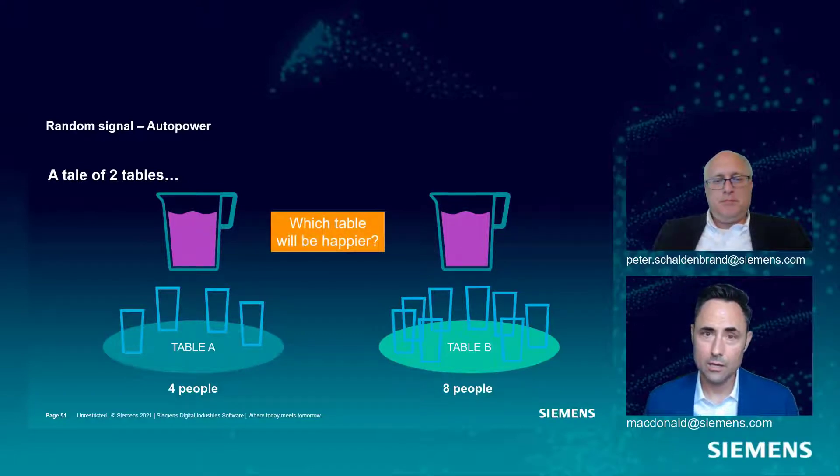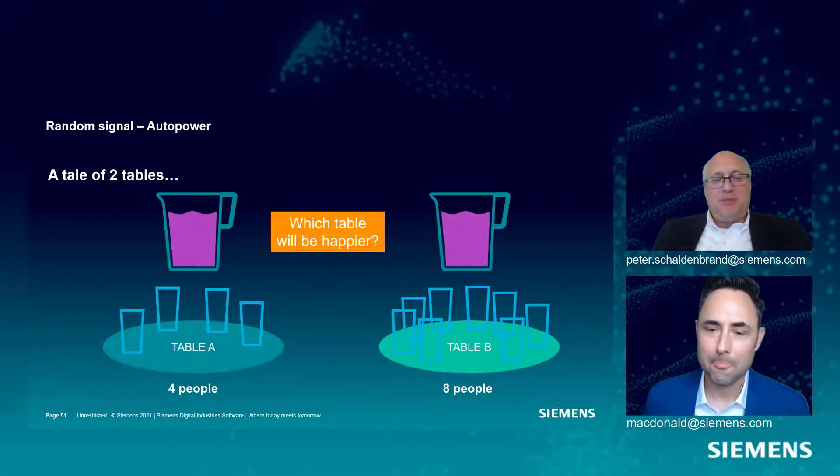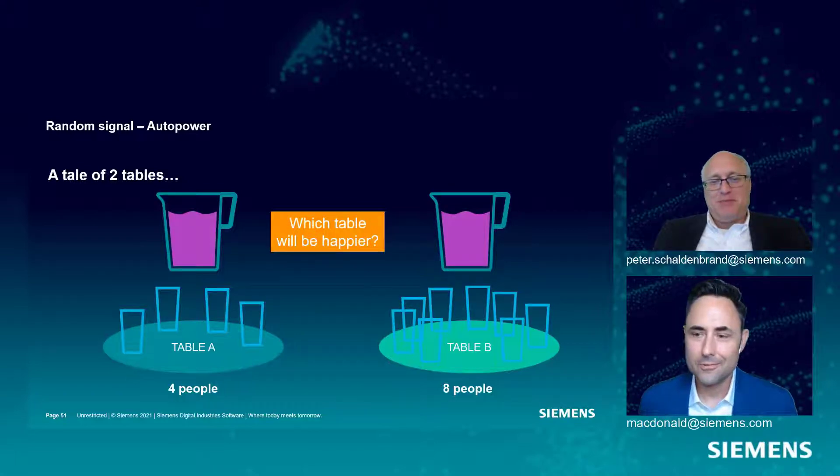So which table will be happier? What's in the grape Kool-Aid? If you like grape Kool-Aid, Table A will be happier because each person will get more.